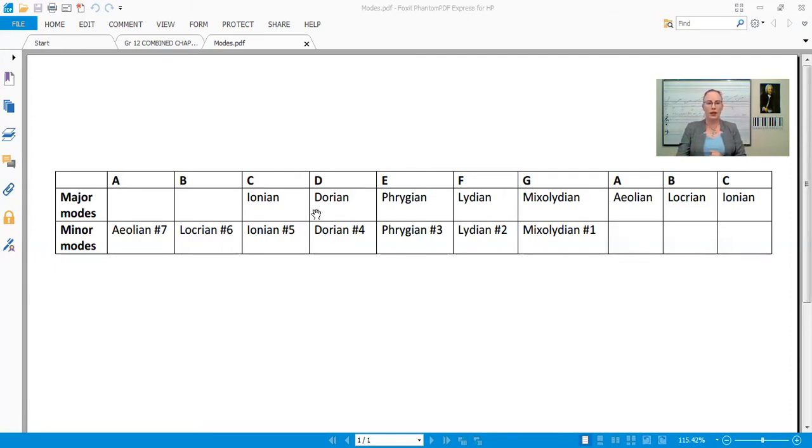Now you'll see that when it gets to the minor modes, there's always a sharp something, sharp seven, sharp six. So with your Aeolian mode it will always be sharp seven, Locrian sharp six, Ionian sharp five. So there's just a slight difference in the names, and I will talk about this in more detail a bit later.